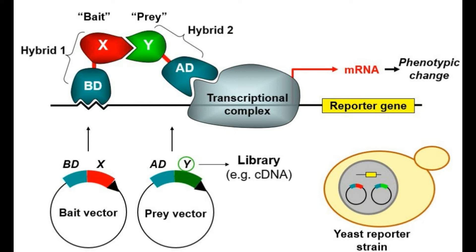This will allow your reporter gene — some gene that you want to express — to start creating phenotypic changes so that you can confirm that your proteins were indeed interacting. In a nutshell, your X and Y proteins, by coming in contact with each other, have caused the expression of a reporter gene, which has caused a phenotypic change that you can observe to confirm the presence of this interaction.